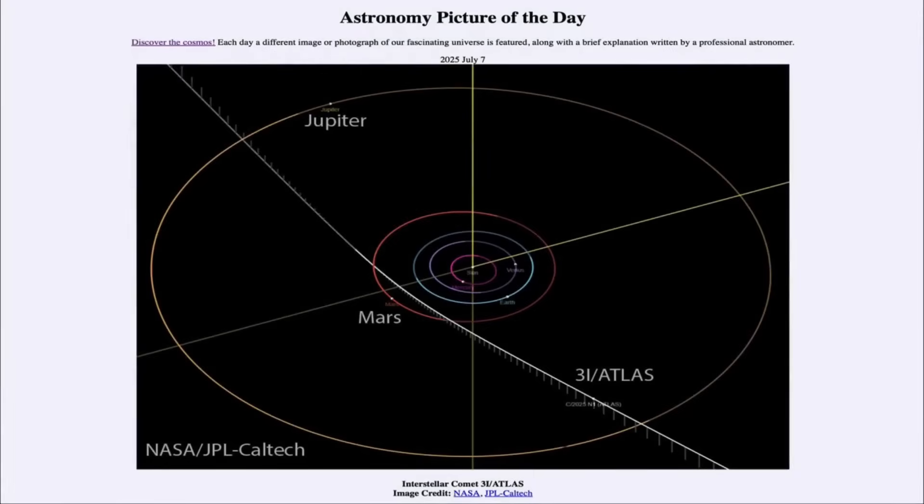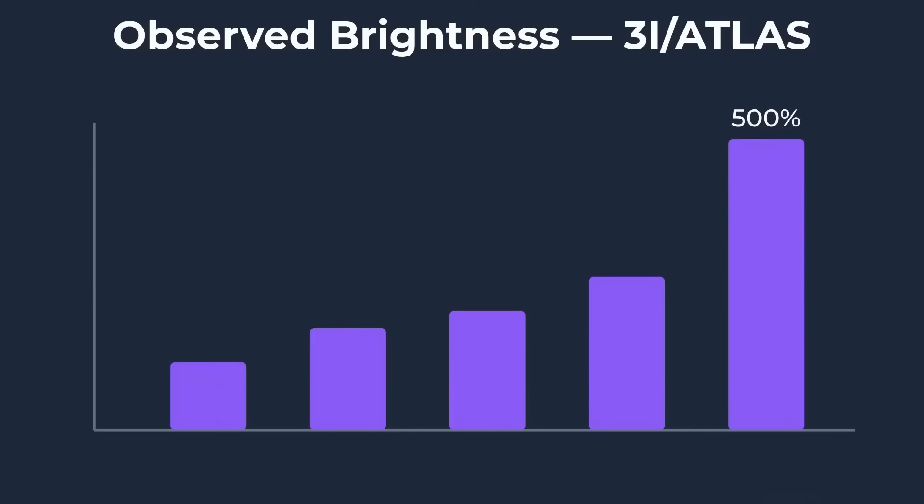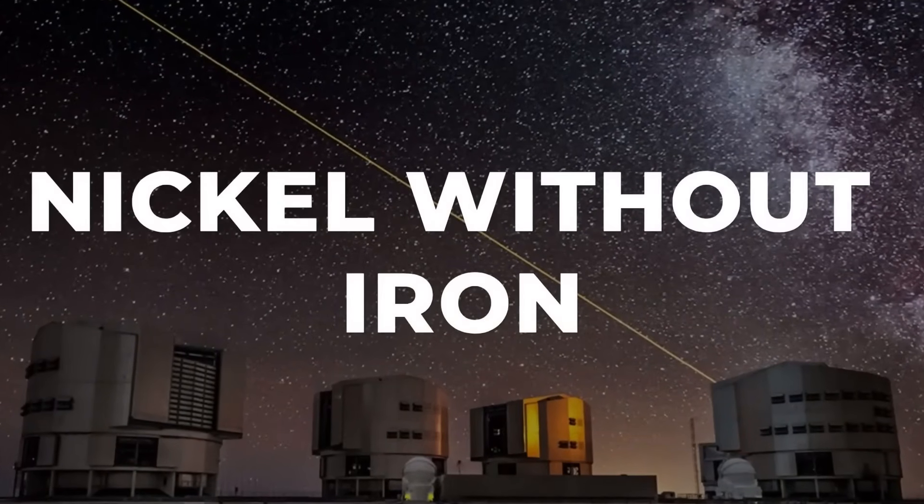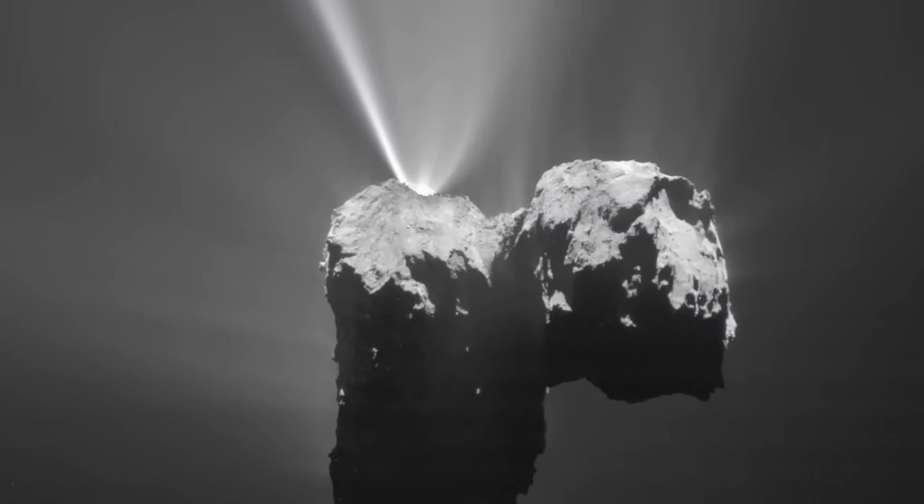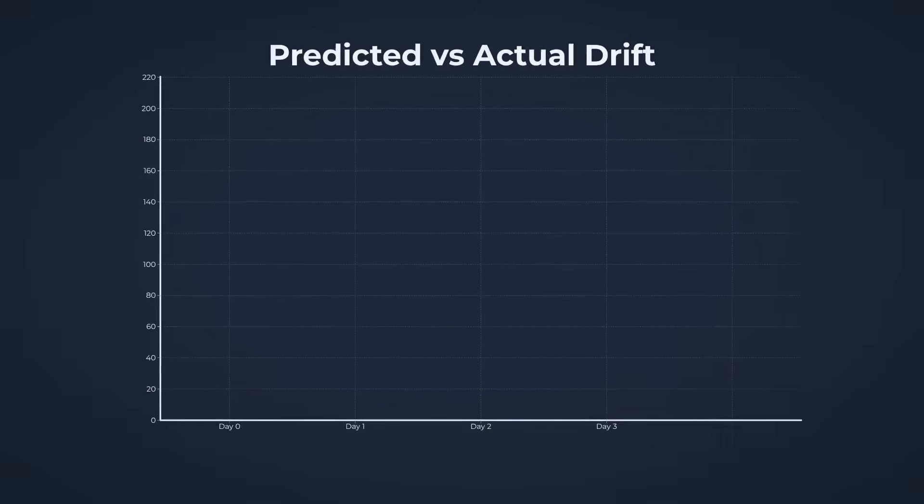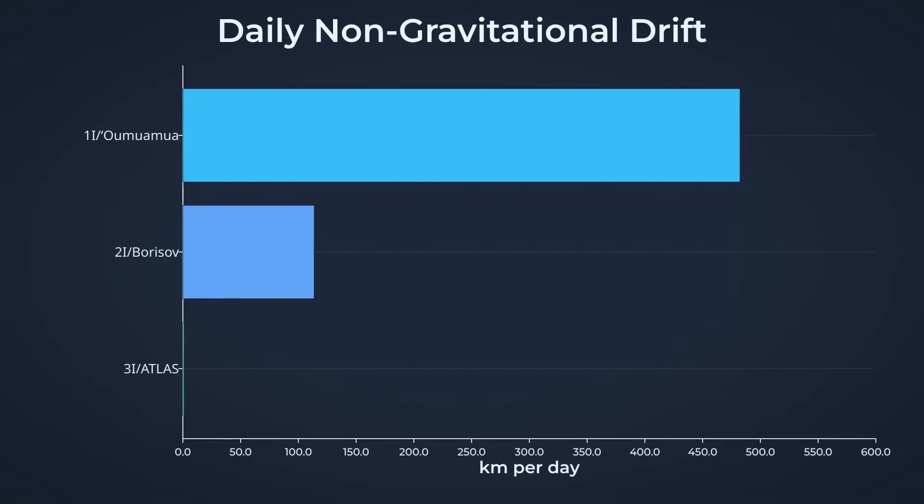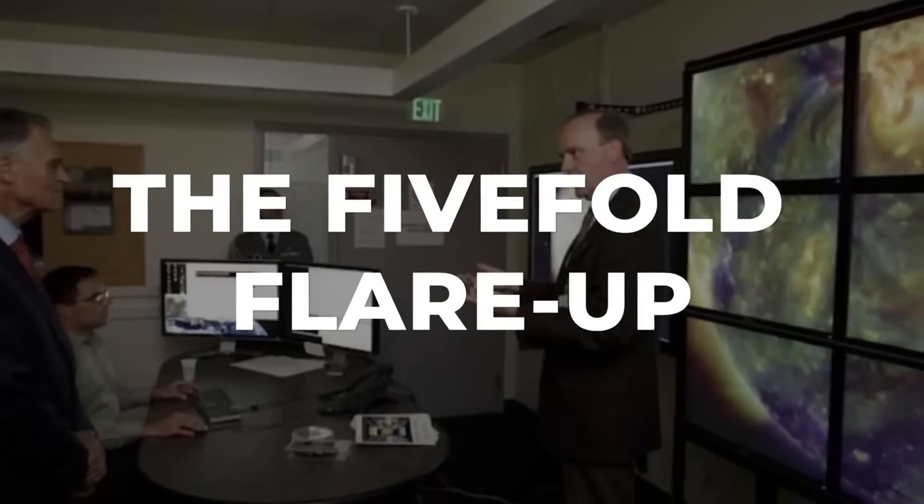With such a tiny set of interstellar visitors, it's hard to escape the feeling that something unusual links them. Statistically, the odds of three consecutive outliers appearing by pure chance are low. Either we've been extraordinarily lucky, or extraordinarily unlucky, depending on your perspective. Or these anomalies point to a broader truth. Perhaps interstellar objects aren't rare oddities at all, but representatives of a population that defies everything we thought we knew.